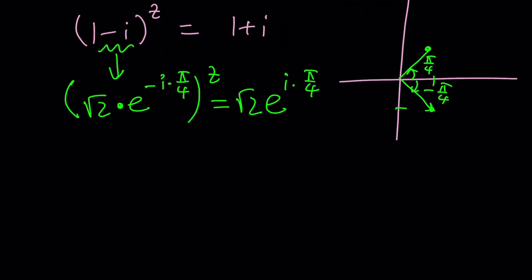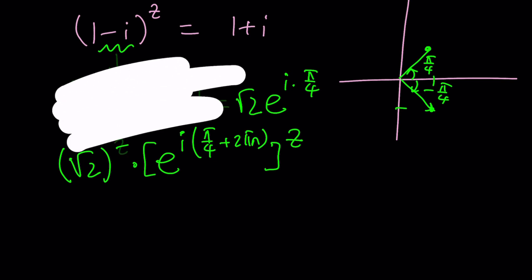Why don't we write root 2 to the power z, and then instead of this, we can just write this as pi over 4 plus 2 pi n, and then raise it to the power z, right? And then just go from there. But let me tell you something, there's even a better way to do it, and let's just go ahead and use that method.